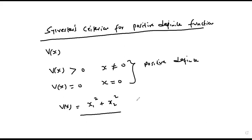When we have a complicated function v(x), it becomes difficult by inspection to tell whether the function is positive definite. Sylvester's criterion comes in handy in determining whether a function is positive definite or not.